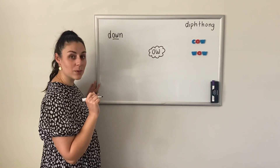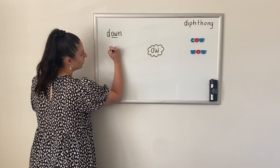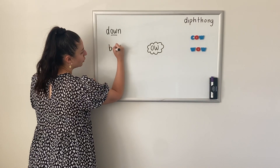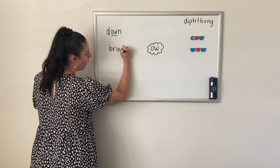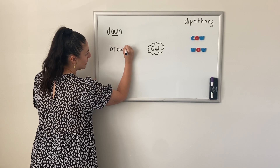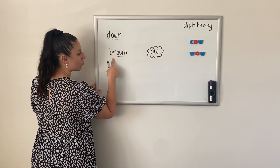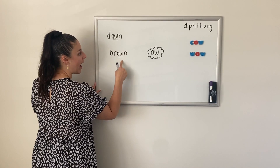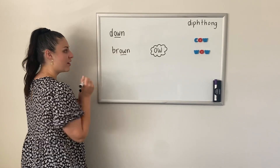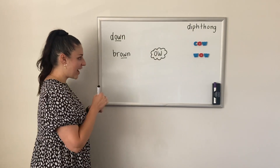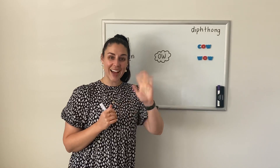And the last one we are going to do is brown: B, R, OW, N. Brown. All right, kindergarten, now it's your turn to have a go on seesaw. Bye.